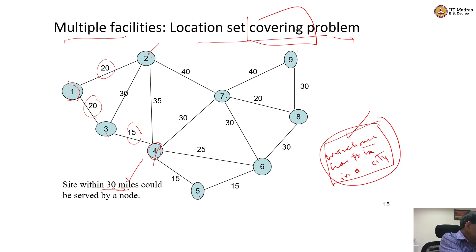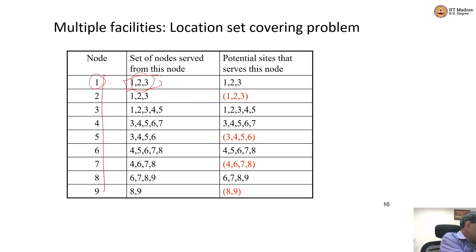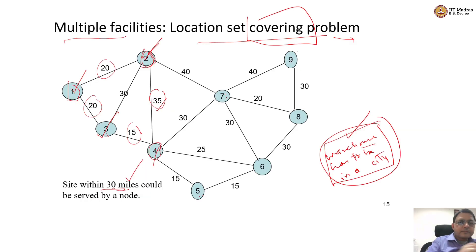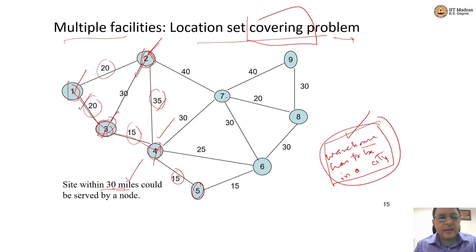When you have a facility at node 2, node 1 can be served, node 2 can be served, node 3 can be served, but node 4 cannot be served again because the distance from 2 to 4 is 35 miles. So having a facility at node 2 can serve only nodes 1, 2, and 3. If you have a facility at node 3, it can serve nodes 1, 2, 3, 4, and 5. Let us verify: 1 yes, 2 yes, 3 obviously yes, 4 yes, and 5 also yes because 15 plus 15 is 30. Having a facility at node 3 serves cities 1, 2, 3, 4, and 5.